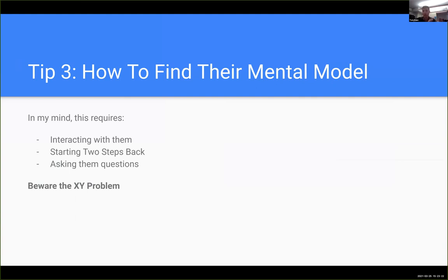The XY problem: a student is trying to fix something — call it X. They do some research, talk to friends, and decide they need Y. Maybe they read that pointers are useful and so they ask 'how do pointers work?' But that's not the question that will help them. If you just answer Y, you haven't helped them — you've almost done them a disservice because now they think they're on the right track. If you ask 'why did you ask me that?' or 'where in the code is this causing the problem?' you'll get them to explain and you'll answer the correct question. Zach has a great link: xyproblem.info.